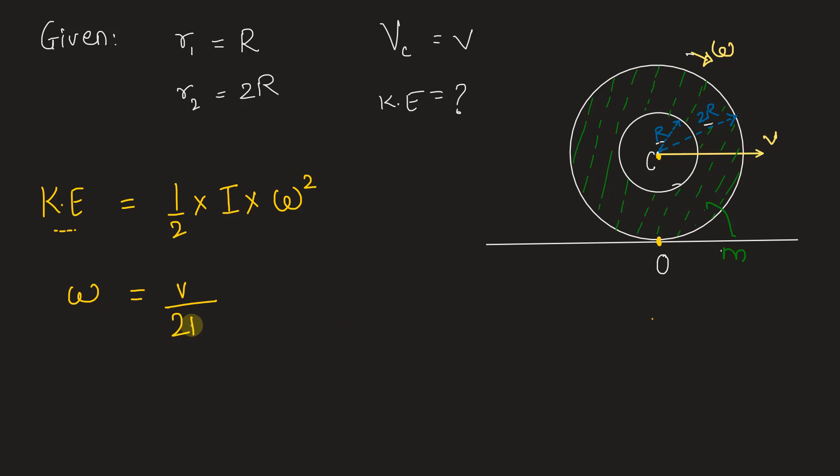So, we have v by 2R giving us the angular velocity of the disc omega. Now, let's calculate I, mass moment of inertia of the disc, but I we will have to calculate about point O rather than point C because motion is happening with respect to point O. O is the instantaneous center.